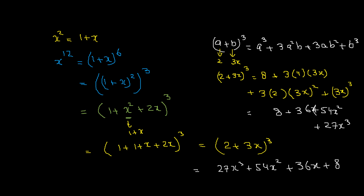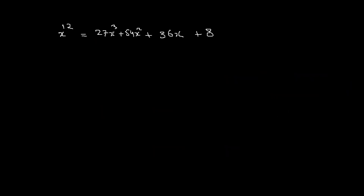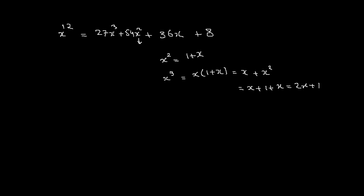So x¹² equals 27x³ plus 54x² plus 36x plus 8. Now we substitute using x² equals 1 plus x. For x³, we write x times x² equals x times (1 plus x) equals x plus x², and replacing x² again gives x plus 1 plus x, which equals 2x plus 1.